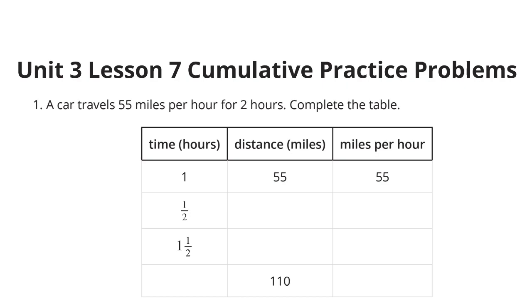A car travels 55 miles per hour for 2 hours. Complete the table. Well, we're going to have equivalent ratios in this table, because, after all, equivalent ratios have the same unit rates. If it's going 1 hour and 55 miles, half of that is going to be 27.5, just 55 divided by 2. But, guess what? That's still going to be 55 miles per hour, because equivalent ratios have to have the same unit rates.